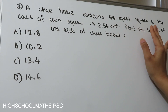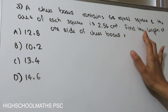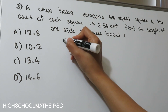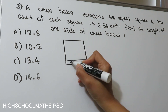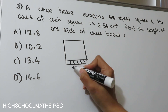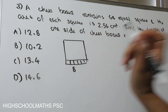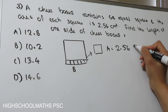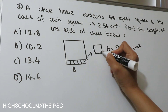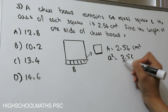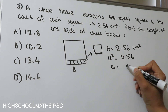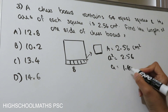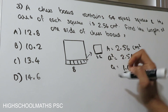Question 3: A chessboard contains 64 equal squares, and the area of each square is 2.56 cm². Find the length of one side of the chessboard. There are 4 options. The chessboard has 64 squares, with 8 squares on each side. The area of each small square is 2.56 cm². The square root of 2.56 is 1.6 cm, which is the side length of each small square.